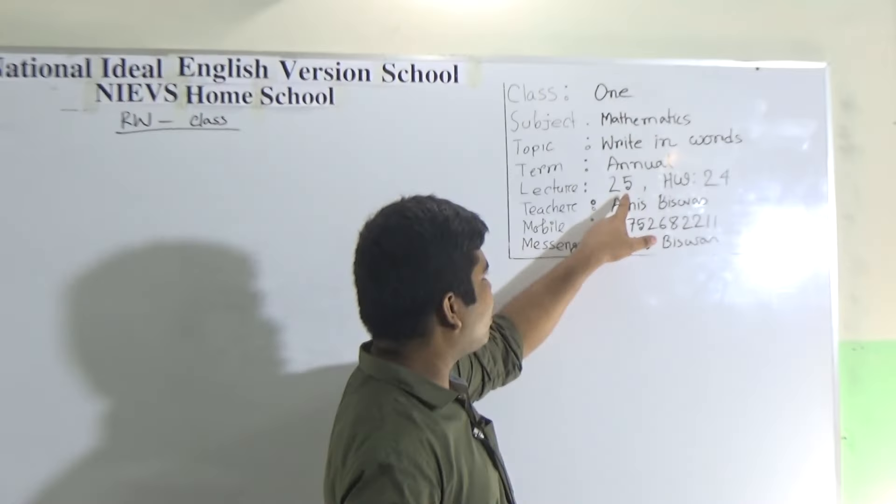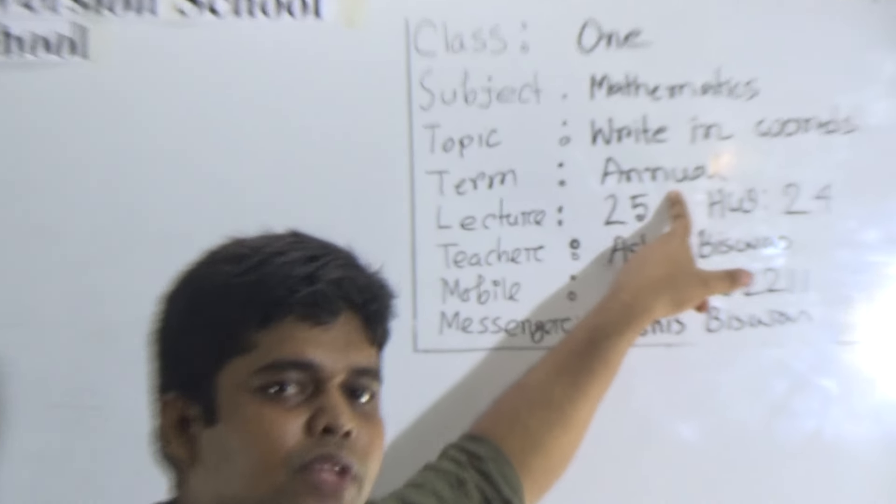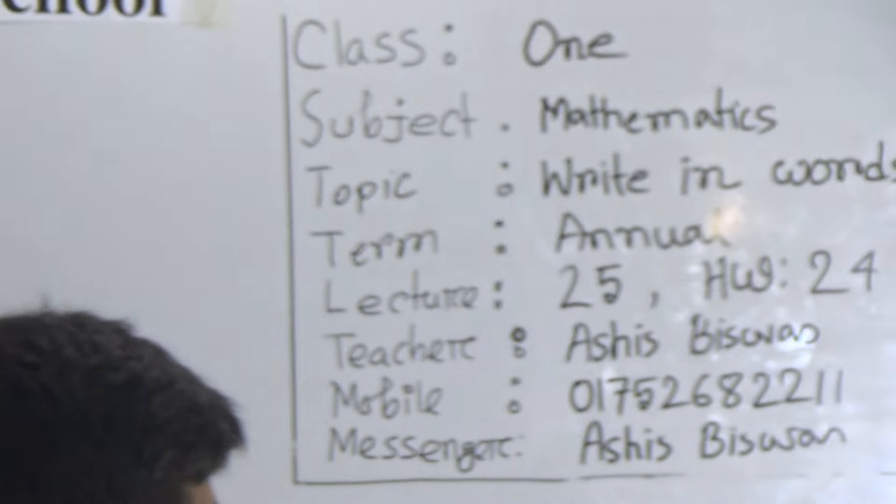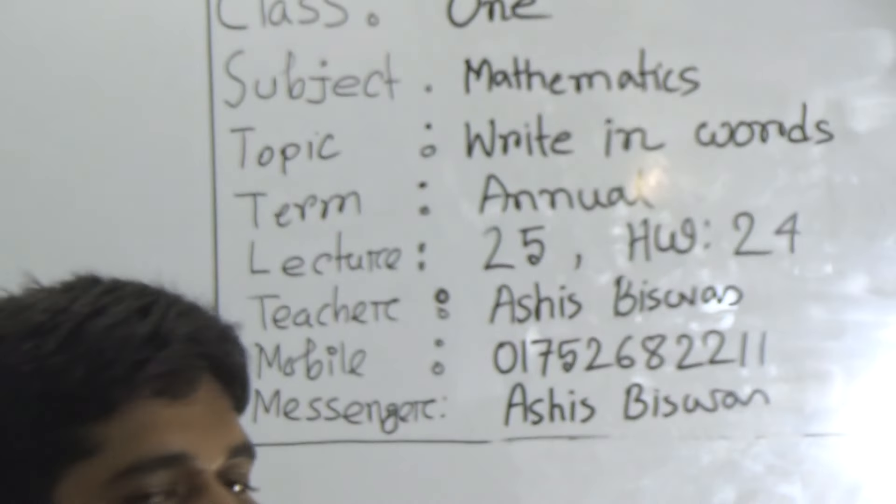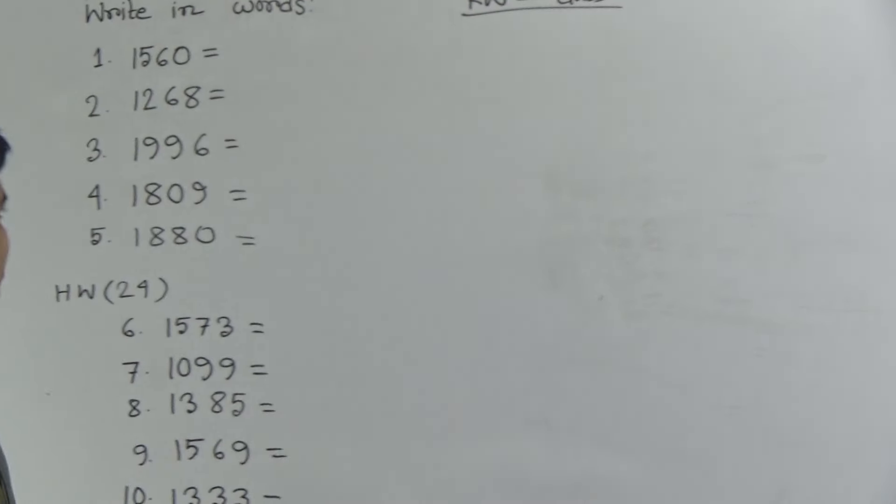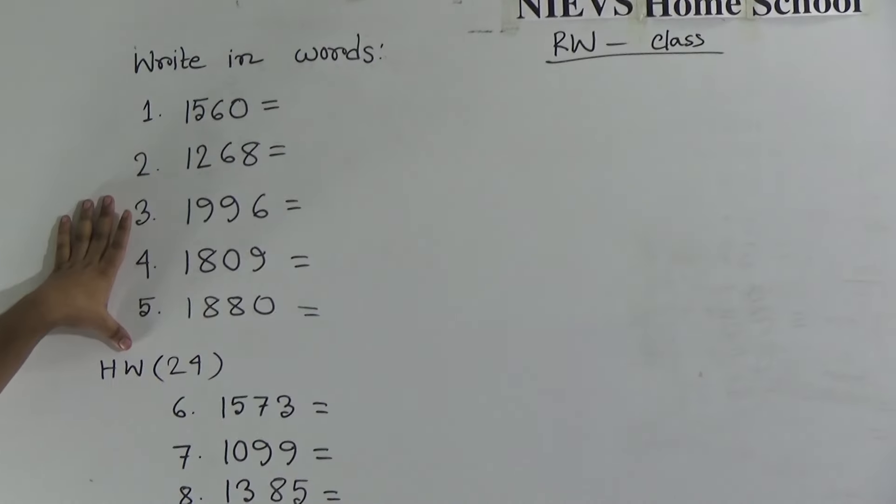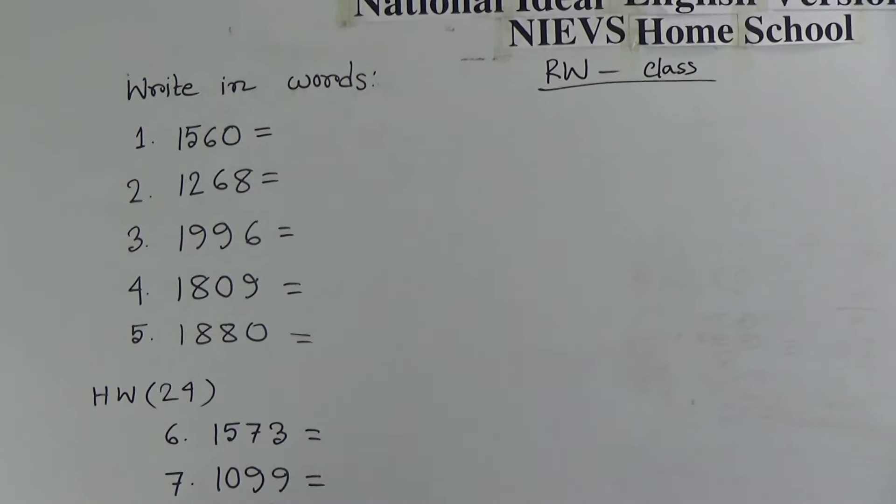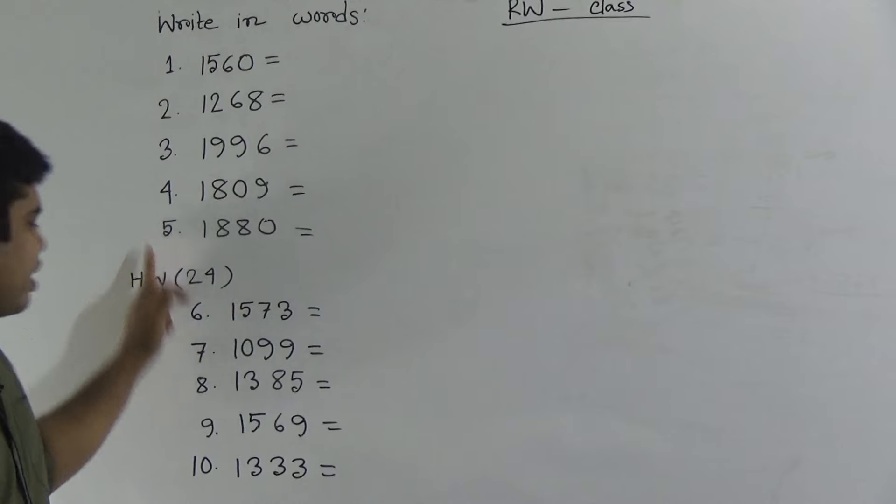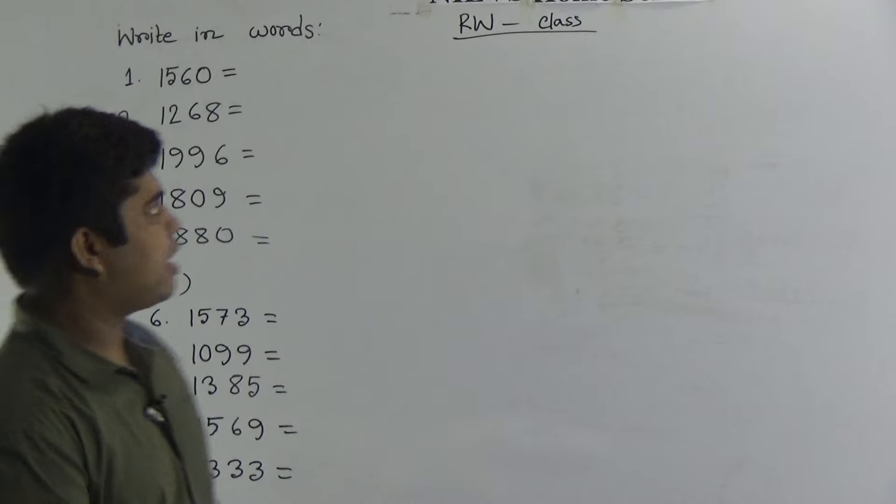Our today's lecture number 25 of Annual Drum and today's SW number 24. I repeat our today's SW number 24. So let us start our class. In our class we shall solve 5 numbers, then another 5 numbers will be your SW. 1 to 5 will be your CW and 6 to 10 will be your SW.